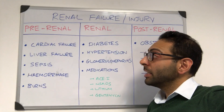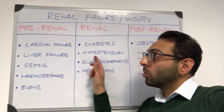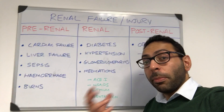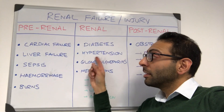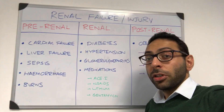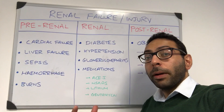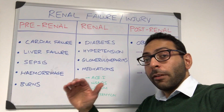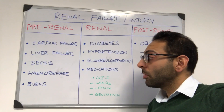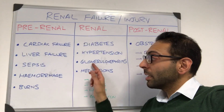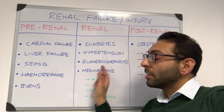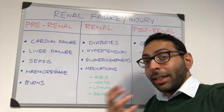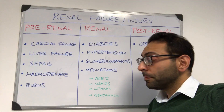Renal causes include conditions that affect the kidney as well as other parts of the body, such as diabetes, hypertension, and myeloma. It could also be conditions that more predominantly affect the kidneys, like glomerulonephritis, interstitial nephritis, or polycystic kidney disease.